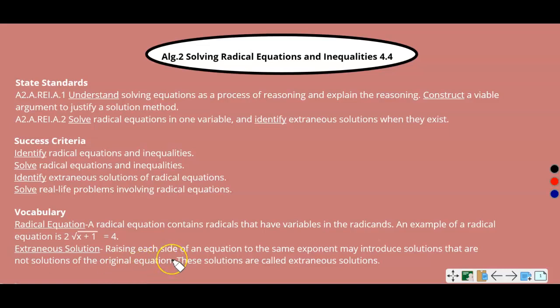Remember when you're taking the square root, to solve these we're going to have to square both sides. The variable represents an unknown number, and any number squared is going to be positive — 2 squared is 4, and negative 2 squared is also 4. So sometimes you're going to get an extraneous solution, which means you solved it correctly, but when you plug it back in to check it, it doesn't work. You always have to check your answers to make sure your solutions are true solutions.